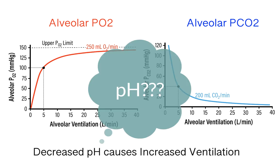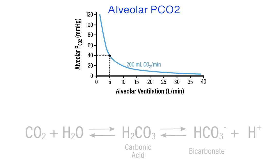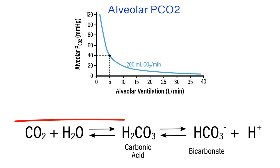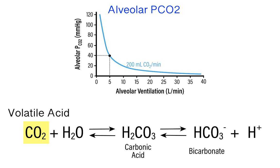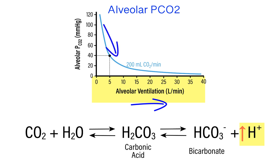Why is it that an increase in proton concentration, or a decrease in pH, brings about an increase in ventilation? Blood pH is strongly influenced by the partial pressure of carbon dioxide, based on its ability to react with water producing carbonic acid, which ultimately dissociates into bicarbonate and a free proton. In this way, carbon dioxide can be thought of as a volatile acid. Therefore, if arterial proton concentrations are too high, one compensatory mechanism the body can utilize is to increase alveolar ventilation, thereby decreasing the partial pressure of carbon dioxide. Reducing arterial PCO2 decreases the rate of proton production.